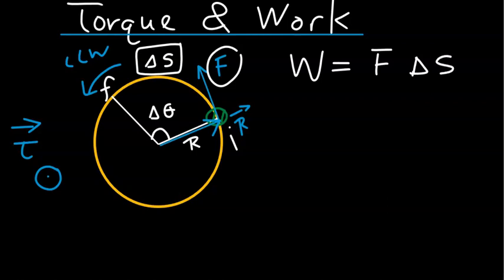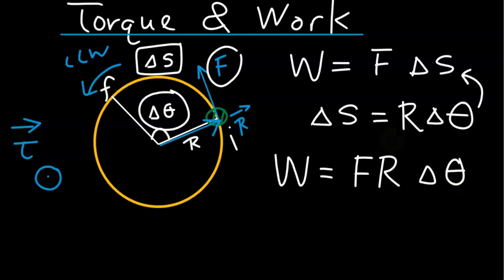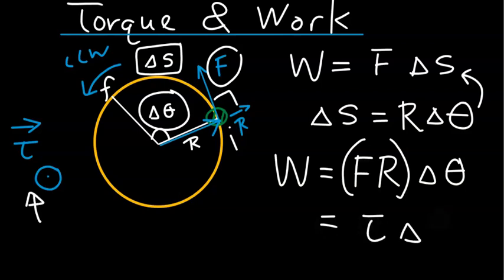At the same time, we also know that the arc length delta S, the linear displacement, is related to the angular displacement delta theta through this equation. By substituting this equation in, we get work equals F·R·Δθ. Now, because the angle between F and R is 90 degrees, F times R is quite simply the magnitude of that torque, and then multiplied by delta theta gives you the same work.